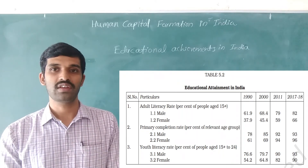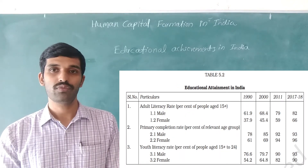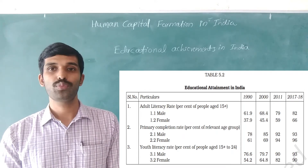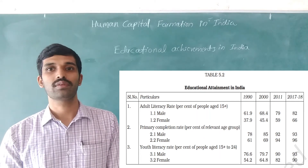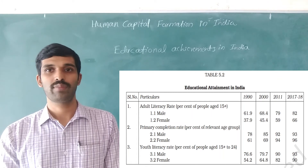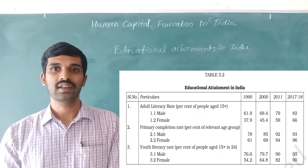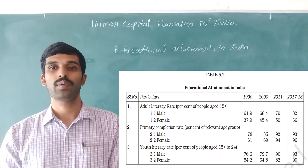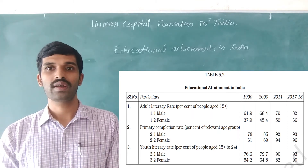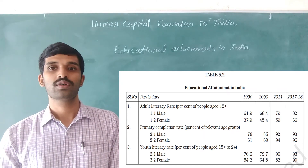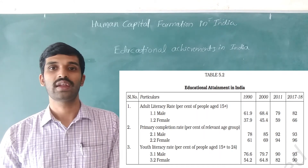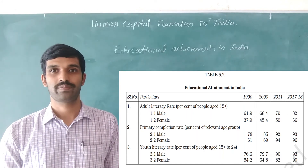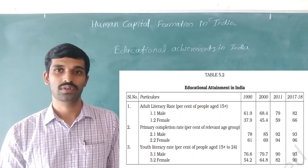Primary completion rates improved from 78% males and 61% females in 1990, to 85% males and 69% females in 2000, to 92% males and 94% females in 2011, and to 93% males and 96% females in 2017-18. Youth literacy rate rose from 76.6% males and 54.2% females in 1990, to 79.7% males and 64.8% females in 2000, to 90% males and 82% females in 2011, and to 93% males and 90% females in 2017-18. We can find development year by year across all three indicators.